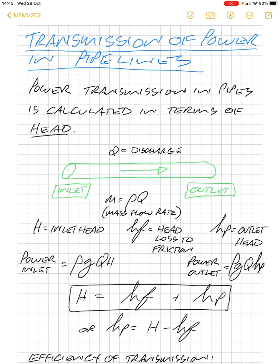And in the illustration below, you can see we have a pipe with an inlet on the left and the outlet on the right. Q is our discharge of the pipe, and if we multiply that by rho, or the density of the fluid, we get our mass flow rate.